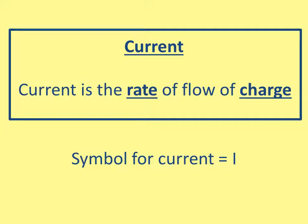Current is the rate of flow of charge. The key words here are 'rate' and 'charge' — it's not just the amount of charge, because there's lots of charge within a metal. It's the rate of flow: how quickly the charge is moving. The more charge that moves per second, the more current there will be. The symbol for current is I, which I think is based on a French word.